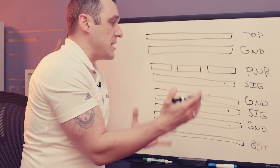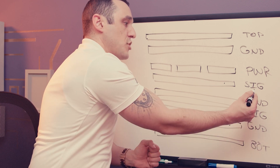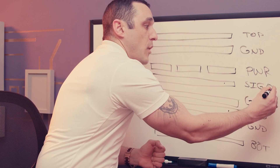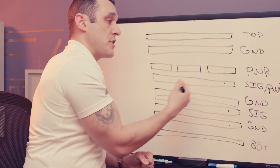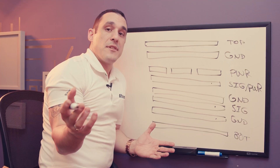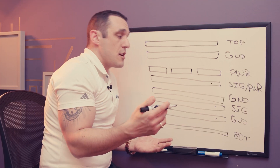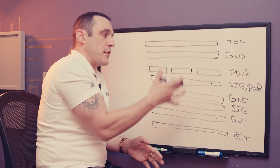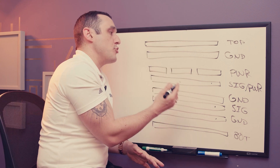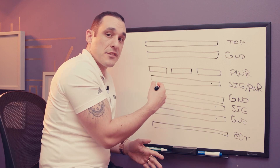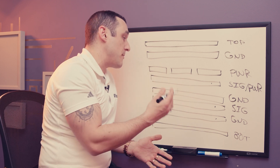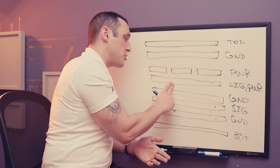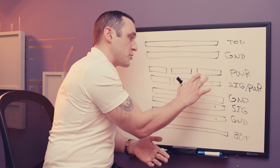What might also happen in higher layer count boards is instead of just having signal you might have signal as well as power mixed in on a layer. This may be necessary for high speed design because you could require a lot of current as you scale up to high layer counts. You may need multiple power layers running at multiple voltages, so you could have splits in those power layers mixed in with signal on those internal layers.